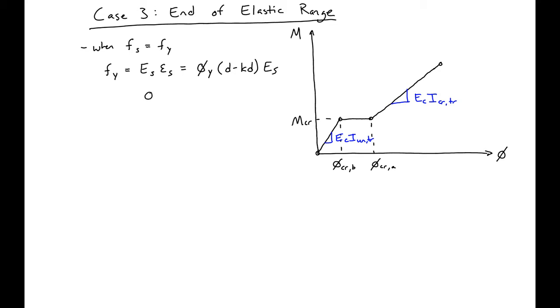We can solve for our yield curvature, finding our yield curvature to be fy divided by (d minus kd) times Es. We can then find our yield moment equal to our yield curvature times Ec times I cracked transformed.